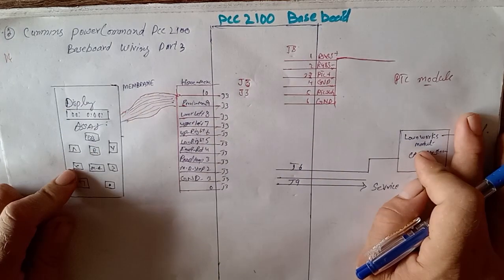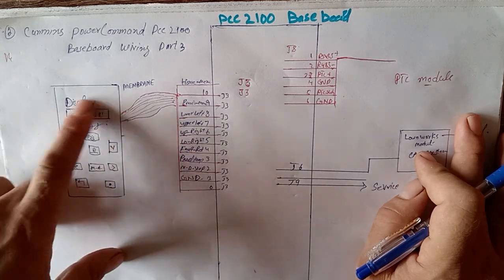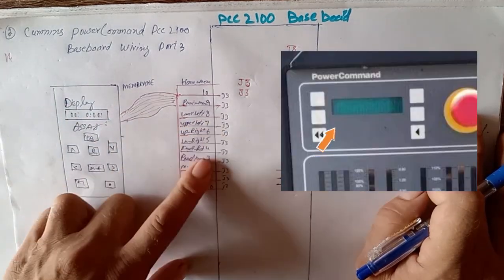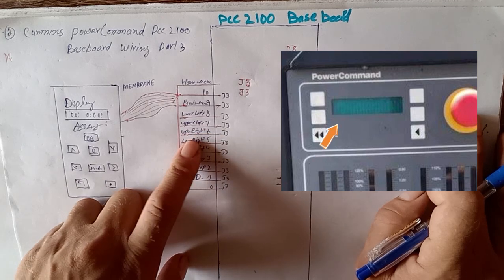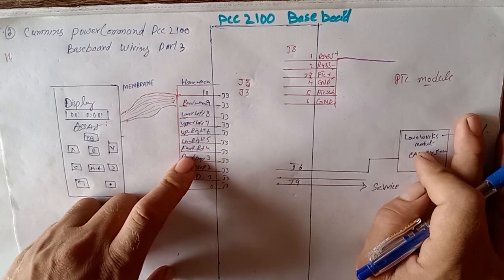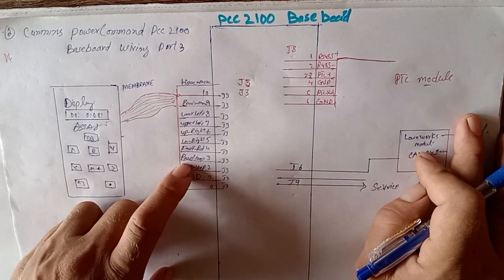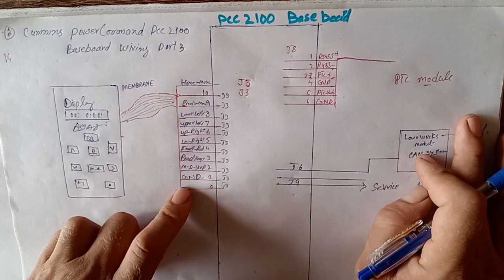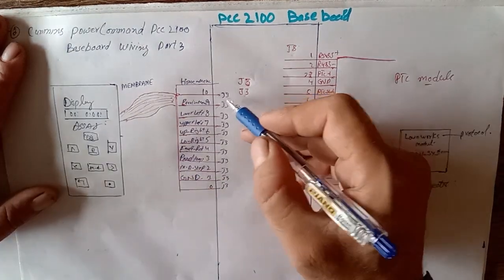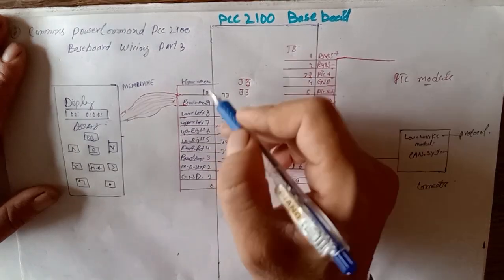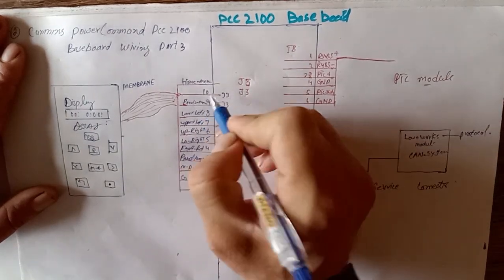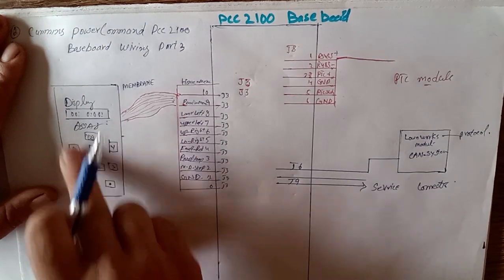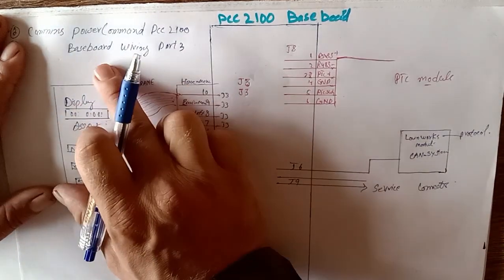This is our power command display. The power command display has some buttons: navigation keys, reverse menu, lower lift, upper lift, upper right, lower right, and also fault reset, panel lamp test, manual run stop, and also ground. From 0 to 10 pins, each pin is going for each button and also to display.